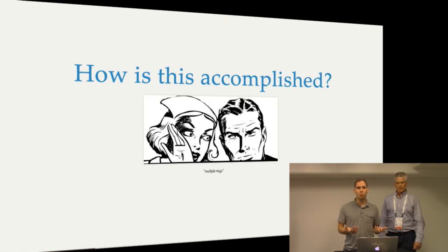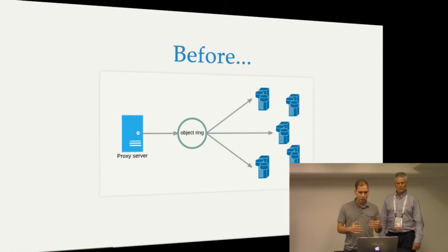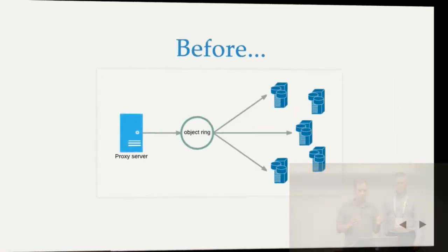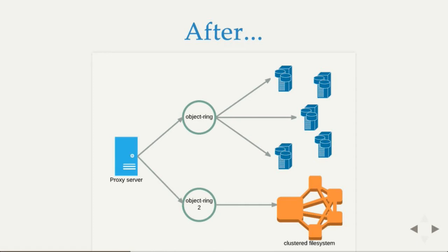How was storage policies implemented? Digging a little bit deeper into the Swift architecture, Swift used this idea of a hashing object ring to define where to store the data. You had only one object ring that the proxy server queried to get the list of servers to talk to. With storage policies, you now have multiple object rings. So in this example, we have one to store three replicas, and we have another object ring to store your cluster file system.